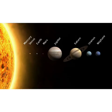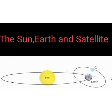Planets are big balls of rock and gases. They do not give out their own heat and light. Satellites move around planets. Like planets, satellites also do not have their own heat and light — they shine because they reflect back the light of the sun that falls on them.